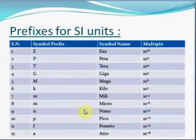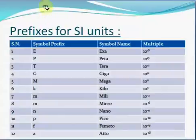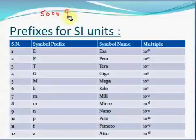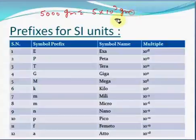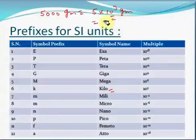Now we will see what are the prefixes for SI units. We have a table here. For example, you can write 5000 grams as 5 x 10 to the power 3 grams, and the prefix for 10 to the power 3 is kilo. So you can write it as 5 kilogram.